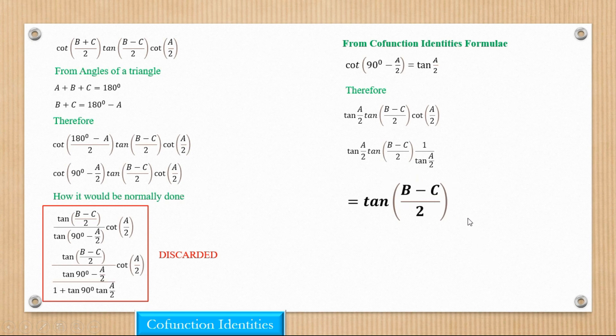So this is where cofunction identities formula can become quite useful in cases where we have such situations where we will easily not know how to take the next step. So it helps simplify the journey for us.